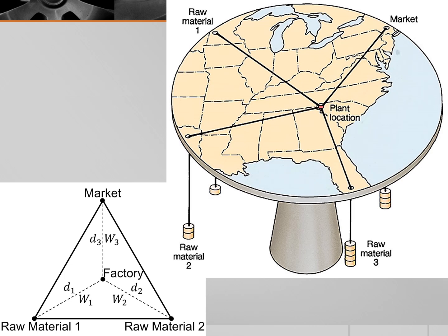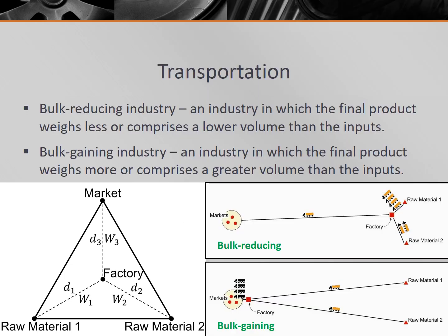Weber's least cost theory was based on the assumption that a factory would need two raw material inputs that would be processed into a finished good and shipped out to just a single market point. To Weber, the most important cost was transportation. Fuel and shipping costs are heavily contingent on the weight of the goods and how far they are being transported, so heavy or bulky items are more expensive to ship — a good example of the friction of distance. Raw materials either gain or lose weight as they're processed into a finished good, and this weight change would dictate the ideal location of the factory, according to Weber.